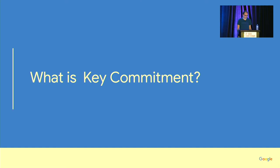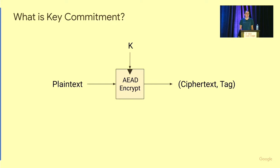To bring everyone onto the same terms: authenticated encryption is really what's used to encrypt the bulk traffic on the internet. Conceptually, it's a quite simple primitive. You put in some plaintext and a key, and it outputs the ciphertext and an authentication tag. You can also decrypt the ciphertext again by putting in the ciphertext and the tag, and you get the plaintext back. Very simple symmetric key cryptography.